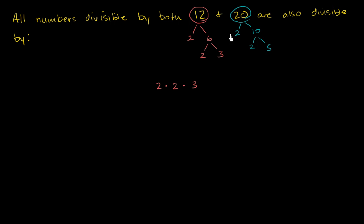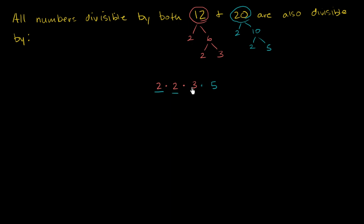Now, if you're divisible by both, you have to have two 2's, a 3, and a 5. Two 2's and a 3 for 12, and two 2's and a 5 for 20. You can verify this for yourself — that this number is divisible by both.